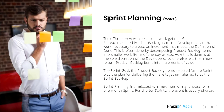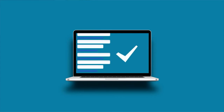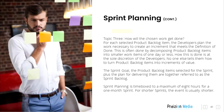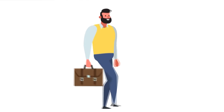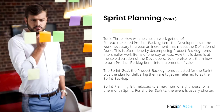Topic 3: How will the chosen work get done? For each selected product backlog item, the developers plan the work necessary to create an increment that meets the definition of done. This is often done by decomposing product backlog items into smaller work items of one day or less. How this is done is at the sole discretion of the developers. No one else tells them how to turn product backlog items into increments of value. The Sprint Goal, the product backlog items selected for the Sprint, plus the plan for delivering them, are together referred to as the Sprint Backlog. Sprint Planning is timeboxed to a maximum of eight hours for a one-month Sprint. For shorter Sprints, the event is usually shorter.